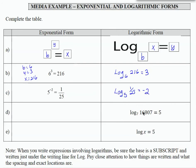Log base 7 of 16,807 equals 5. The base is 7 raised to the 5th power equals 16,807. 7 to the 5th equals 16,807.